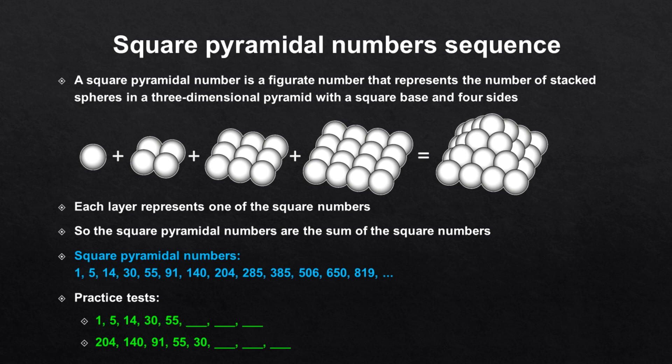Square pyramidal numbers sequence. A square pyramidal number is a figurate number that represents the number of stacked spheres in a three-dimensional pyramid with a square base and four sides. This graphic visualizes the calculation of a square pyramidal number — each layer represents one of the square numbers. So the square pyramidal numbers are the sum of the square numbers. Here you can see a list with the first square pyramidal numbers, and these practice tests are examples of number series tests with square pyramidal numbers.